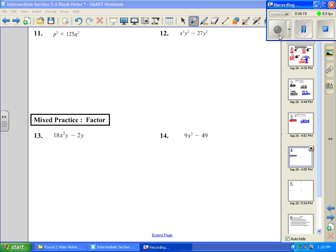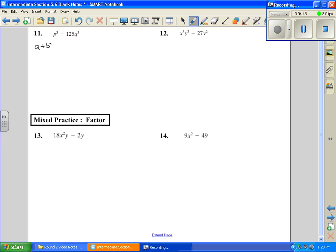Number 11, we're going to check for GCF now. And then I see that P is cubed, I see the Q is cubed, and I want to check and make sure that I can do that 125 is cubed. And it is, so I have sum, because it's a plus, sum of perfect cubes. And my formula from the last page is going to be sum of perfect cubes. It's going to be A plus B, A squared minus AB plus B squared. So the first thing I need to do is come back up here and say my A is going to be P, and my B is going to be 5Q.